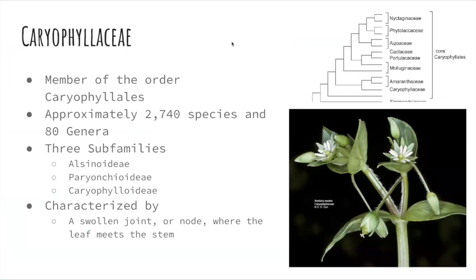Caryophyllaceae is a member of the order Caryophyllales. There are approximately 2,740 species in numerous genera. Caryophyllaceae is separated into three subfamilies: Alsinoideae, Paronychioideae, and Caryophylloideae.